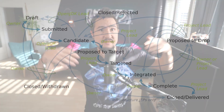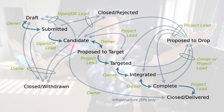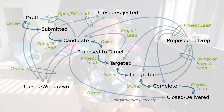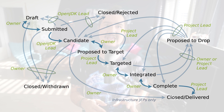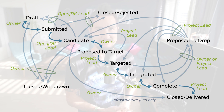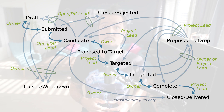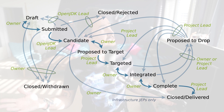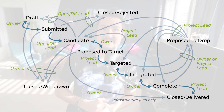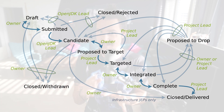A minute ago, I mentioned that JEPs go through states, and indeed they do, as you can see in this handy diagram. No need to rush to the screen if you're currently cooking, commuting, or whatever else you're doing while having me yapping in the background. Imagine a diagram with 11 nodes, 24 arrows, and 13 annotations. Yeah, it's a bit of a mess, so let's talk through it.